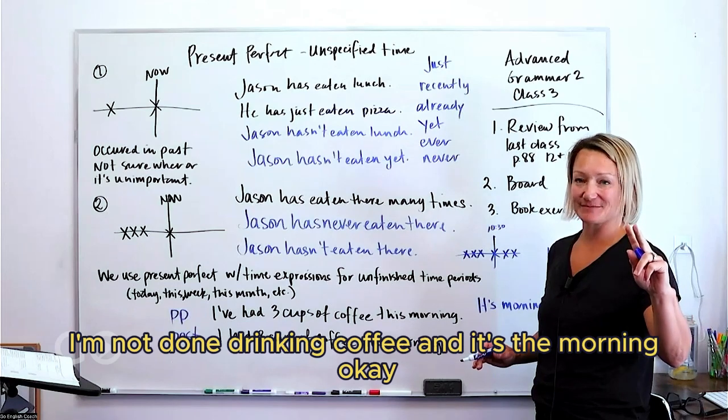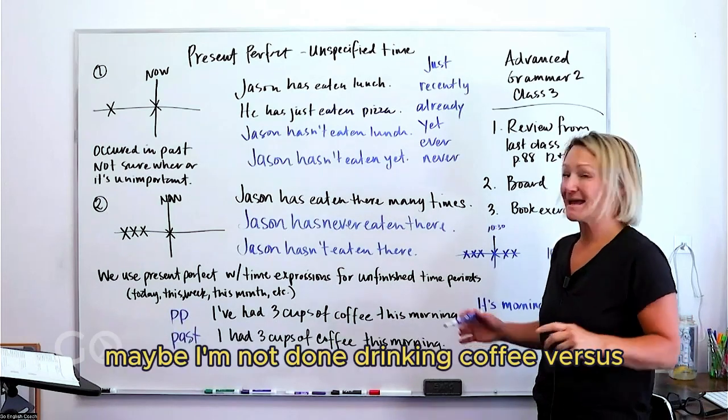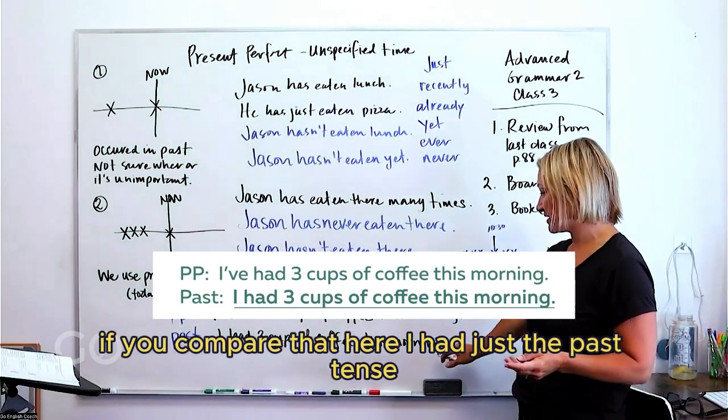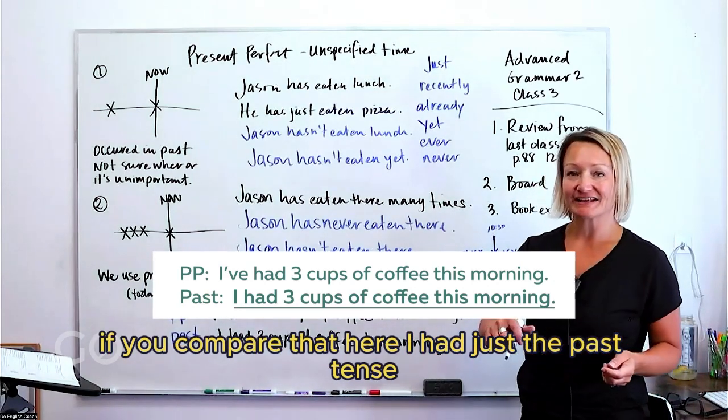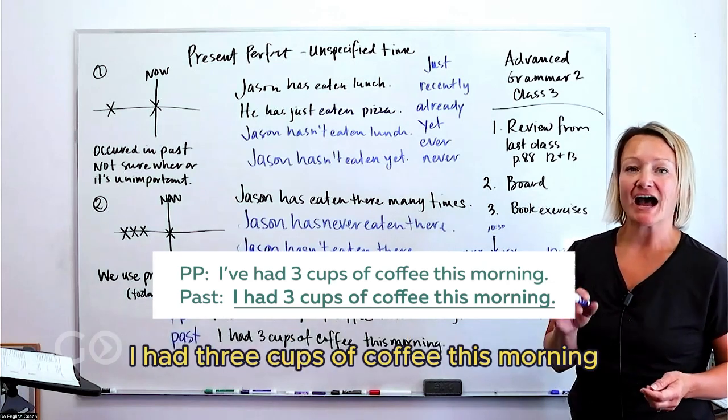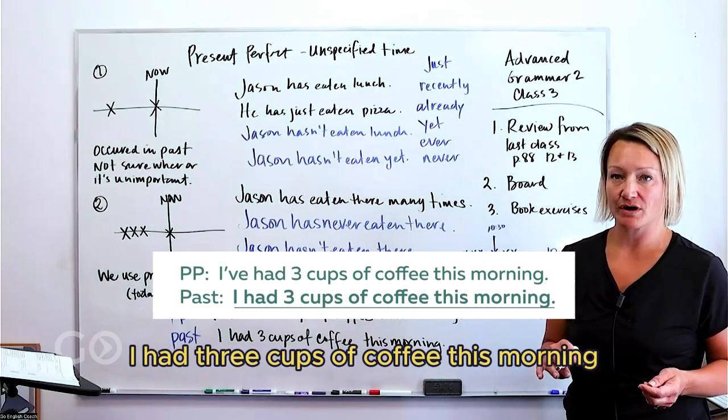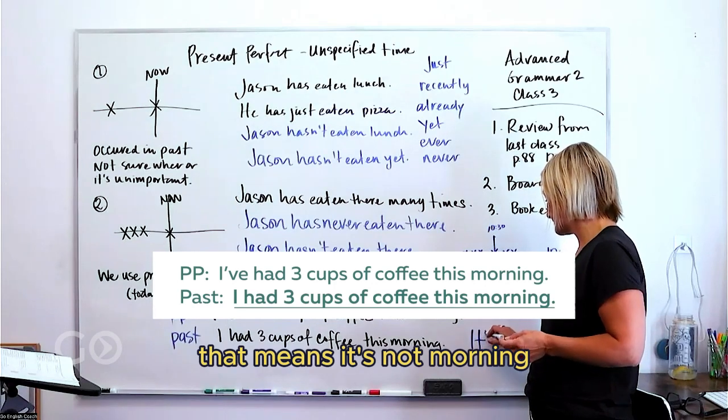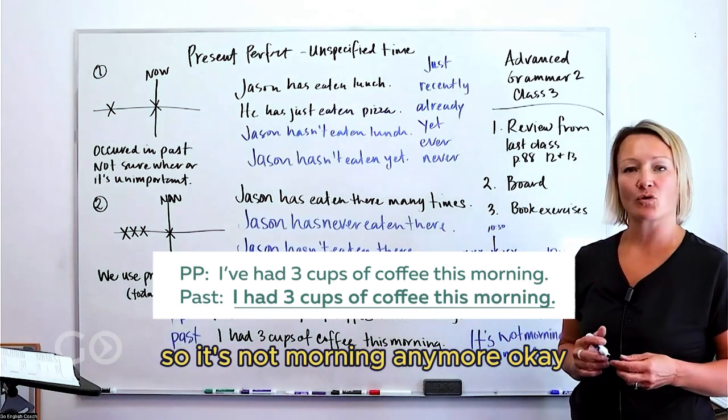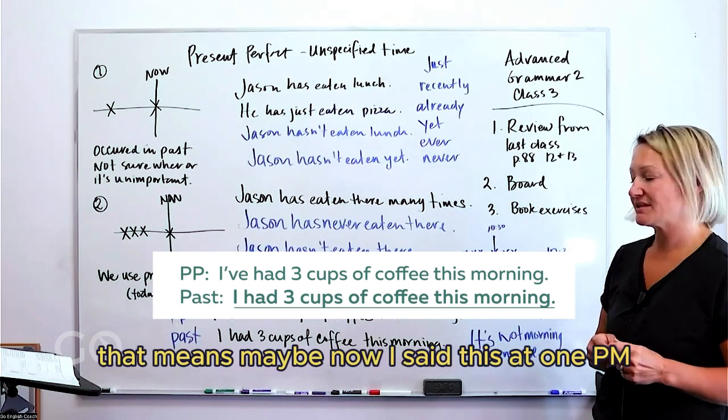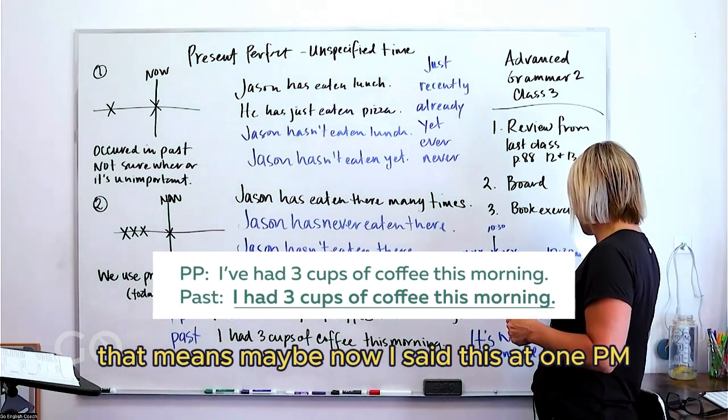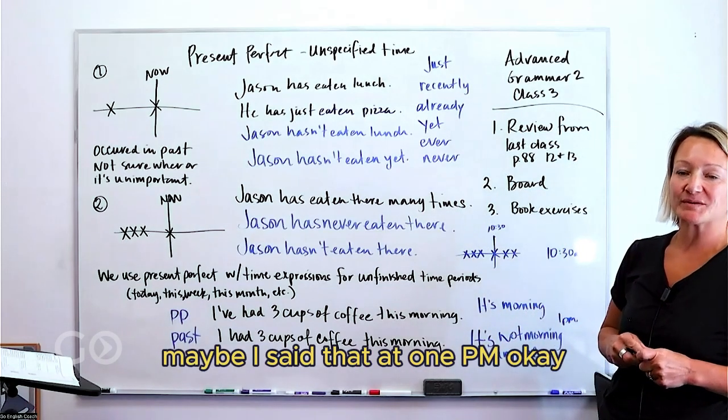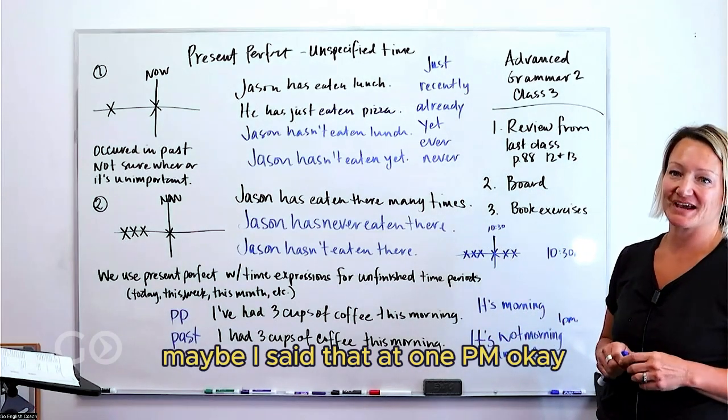Okay, maybe I'm not done drinking coffee. Versus if you compare that here, I had just the past tense, I had three cups of coffee this morning, that means it's not morning. So it's not morning anymore. Okay, that means maybe now I said this at 1 PM, maybe I said that at 1 PM.